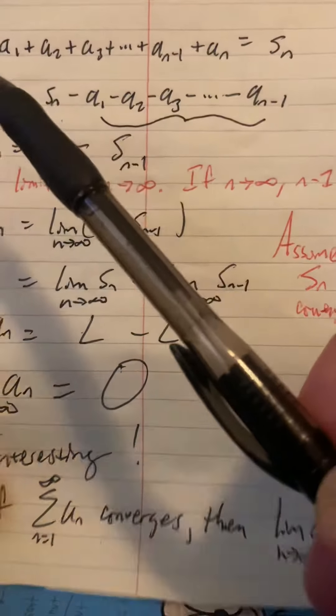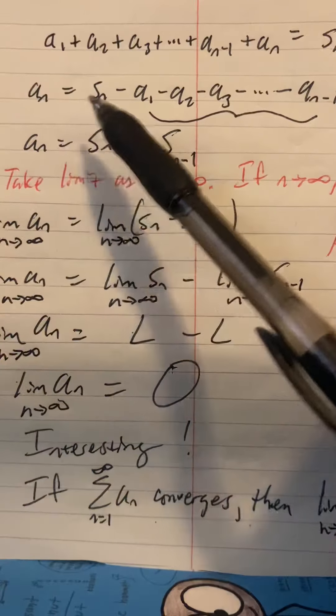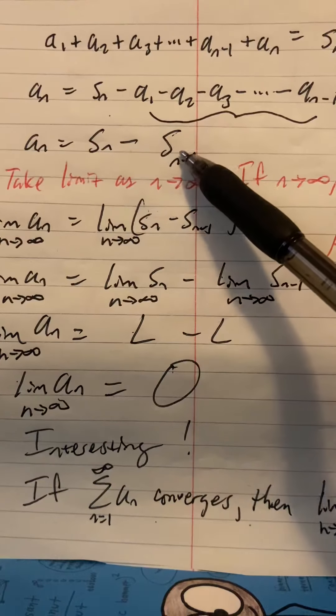So it's s sub n minus 1. So a sub n is s sub n minus s sub n minus 1.